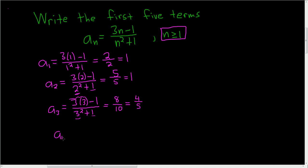a sub 4. This is 3 times 4 minus 1. And the bottom, we get 4 squared plus 1. 3 times 4 is 12. 12 minus 1 is 11. 4 squared, that's 16. 16 plus 1 is 17.